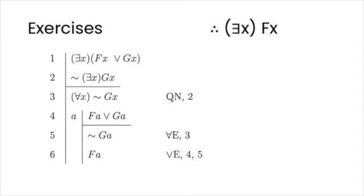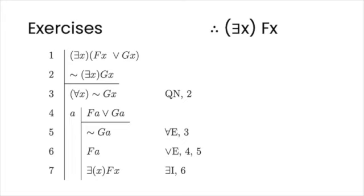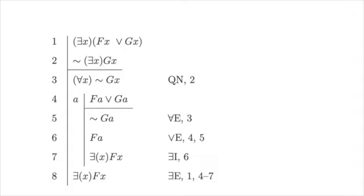So we are ready to reach our conclusion. FA — the sentence in line six — is simply a substitution instance of 'there is an x, Fx,' which is our target sentence. Hence, we can simply existentially generalize on FA, and so we get our target sentence by existential introduction on six. Now we can finally close our subderivation, discharge our assumption, and on line eight we simply copy the contents of line seven: 'there is an x, Fx,' by existential elimination on line one — which has the existential we are exploiting — and lines four through seven, which encompass the subderivation that does the unpacking.